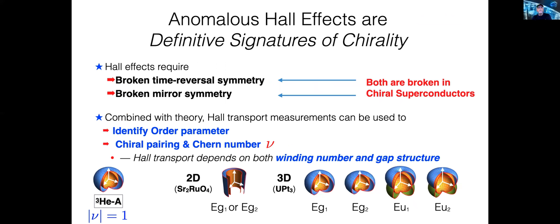Observation of the anomalous Hall or anomalous thermal Hall effect would be a definitive signature of a chiral condensate. Furthermore, theory combined with the experiment can identify the Chern number and the broken orbital symmetries of the superconductor.